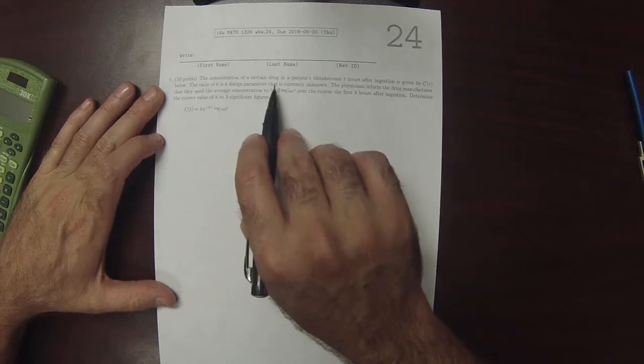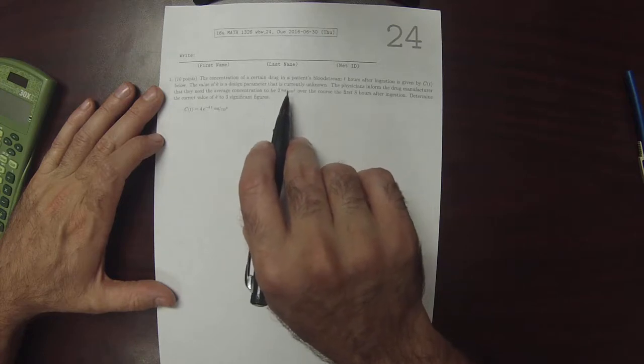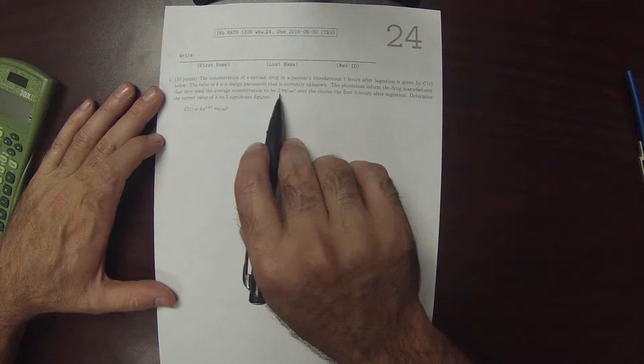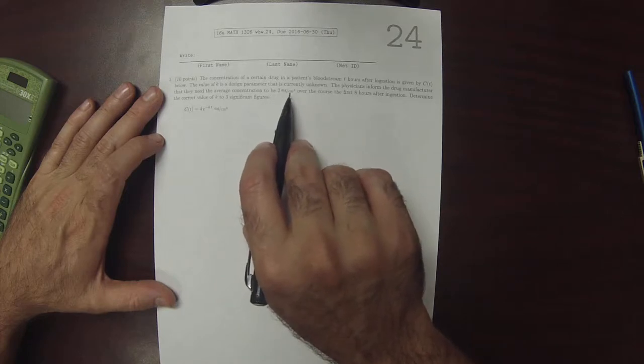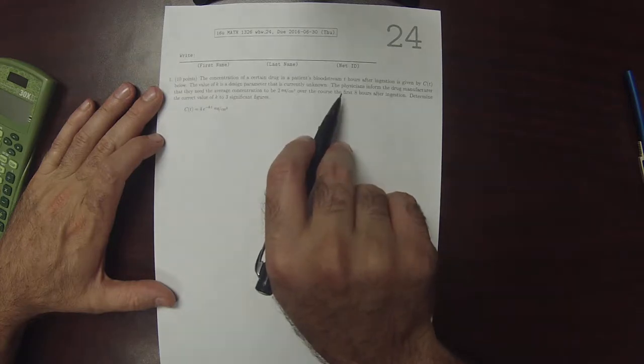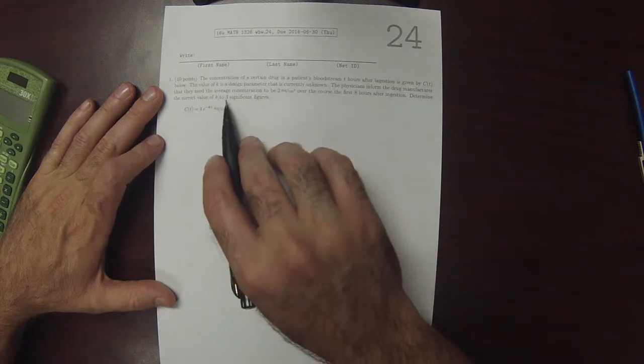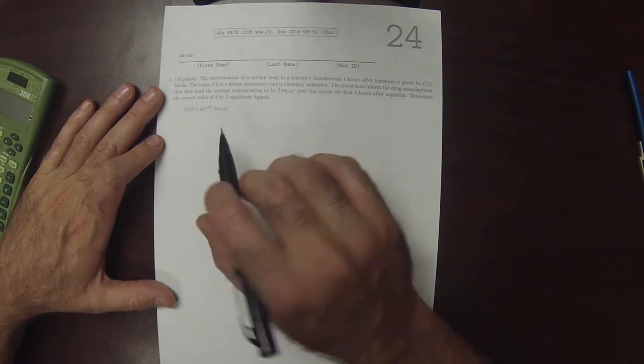The value K is a design parameter that is currently unknown. The physicians inform the drug manufacturer they need the average concentration to be 2 milligrams per cubic centimeter over the course of the first 8 hours after ingestion. Determine the correct value of K to 3 significant figures.